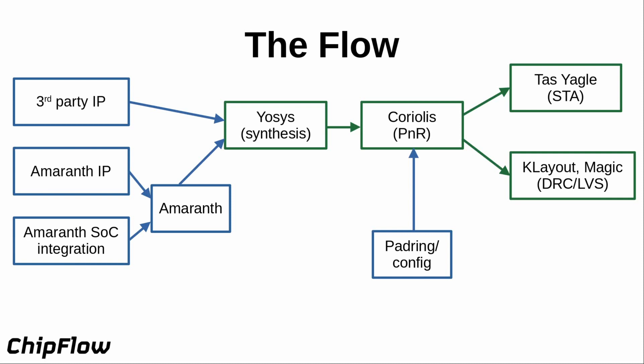To give an idea of how our flow is structured: we combine Amaranth, the Python-based hardware description framework, with IP cores written in Amaranth or Python, and also third-party IP in Verilog or VHDL that can be wrapped in Amaranth, combined with SoC integration. The synthesis part of the flow uses YoSys, the open source FPGA synthesis tool that also supports ASIC. For place and route, we use Coriolis, an ASIC place and route tool developed in France.